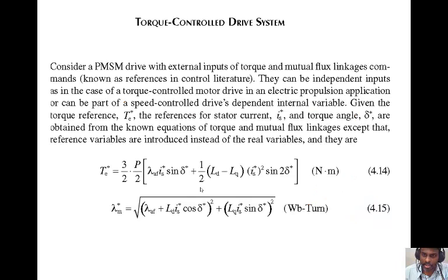As far as control systems are concerned, the advanced motor at present day situation is the Permanent Magnet Synchronous Motor. This drive, known as references in control literature, is going to drive between torque and mutual linkage commands. They can be independent inputs, as in the case of torque-controlled motor drive in an electric propulsion application, or can be part of a speed control drive's dependent internal variable.